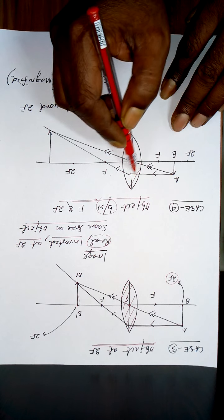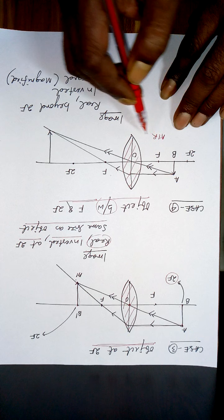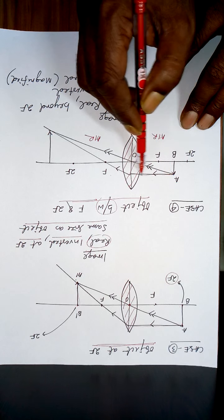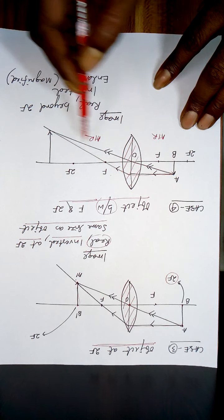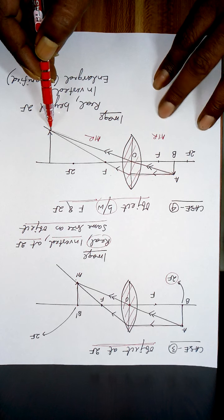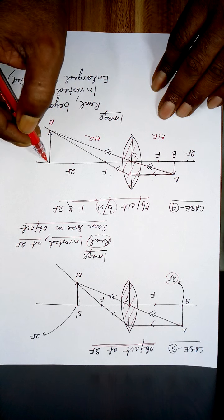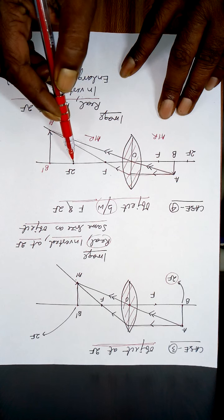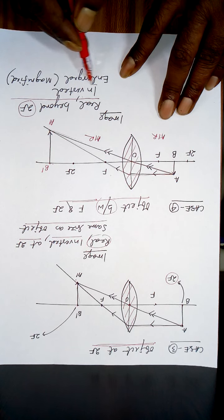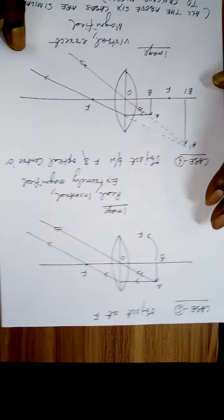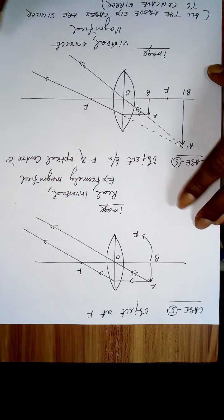Case 4: when the object is between f and 2f. A ray parallel to the principal axis passes through the focus; a ray through the optical center goes undeviated. They arrive at A'B', which is beyond 2f on the other side. The image is real, inverted, and enlarged (magnified).